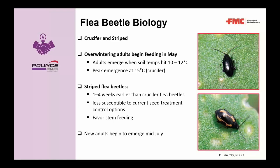Looking at flea beetle biology, there are crucifer and striped flea beetles. Flea beetles have one generation per year, overwinter as adults, and begin feeding in early May when temperatures warm. They become active with the first extended period of warm weather in April and May, with adults emerging when soil temperature hits 10 to 12 degrees Celsius. Peak emergence of crucifer flea beetle is at 15 degrees. Striped flea beetles are generally one to four weeks earlier.